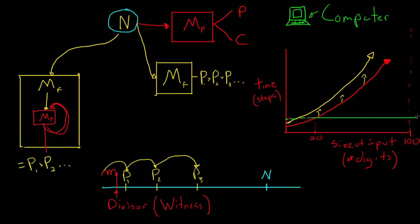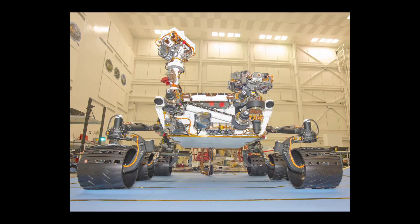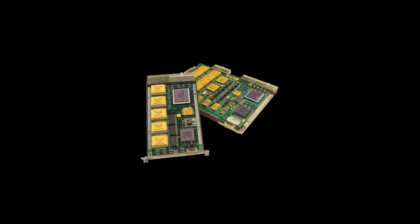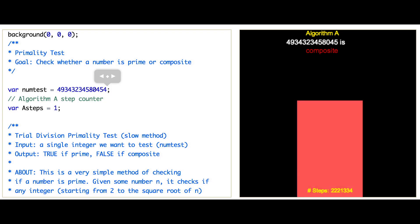And you could think of this as a horizontal line or a threshold on this graph. Anything above this line is out of reach, not feasible to solve. And in this lesson, we were limited by the rover's onboard computer, which was fairly slow, which is why we couldn't run primality tests on numbers with even 20 digits.